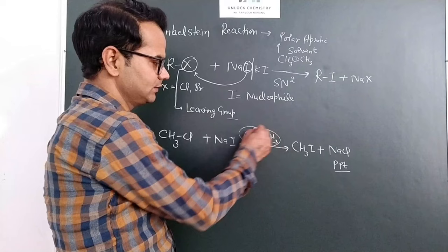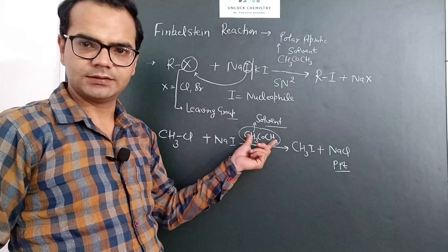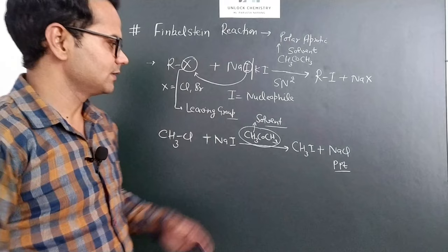That's why acetone is used as a solvent, and we take halide as chloride and bromide. They are insoluble in solvent, in acetone. So this is the Finkelstein reaction, or we can say this is a halogen exchange method.